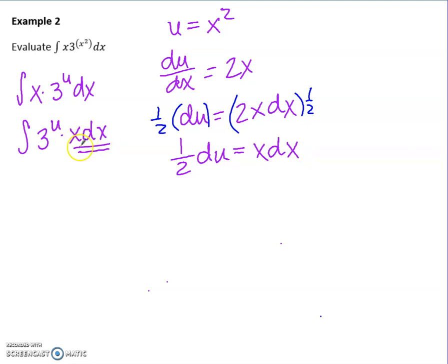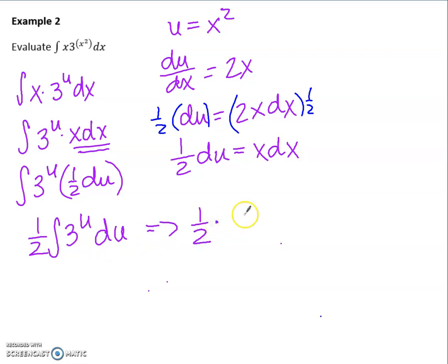So that means this part right here is replaceable with 1 half du. The 1 half is a constant, so that can come out front. So this becomes 3 to the u du, and now I have a pure exponential function. So the antiderivative of that, leave the 1 half out front, would be 1 over ln of your base, your base is still a 3, times 3 to the u plus c.